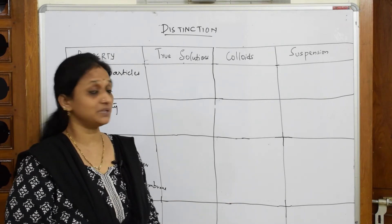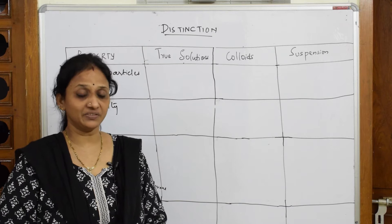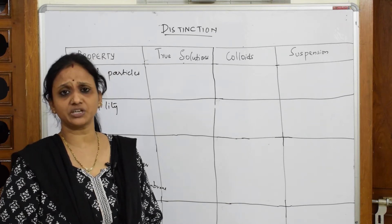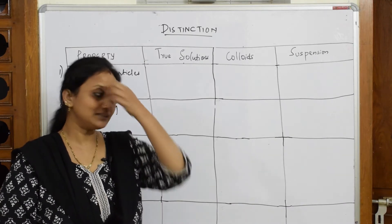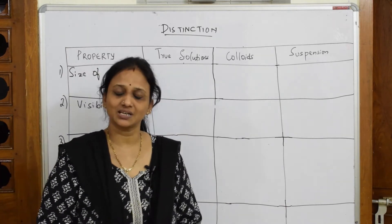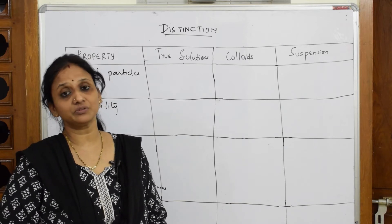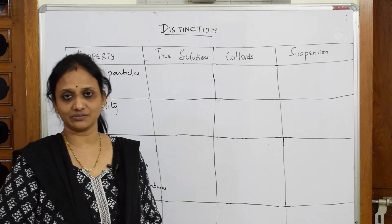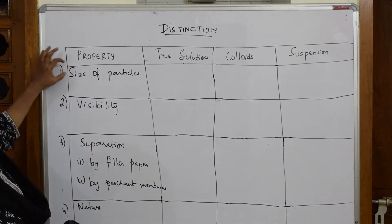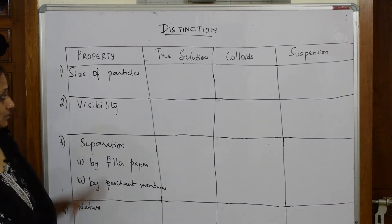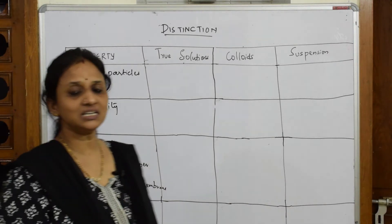Now in Part B, we are going to study about colloids — preparation of colloids, purification techniques, and properties of colloids. Let's learn the differences between true solutions, colloids, and suspensions. Whenever a difference question is asked, the first important thing is the criteria — the property — because that is where your marks lie.